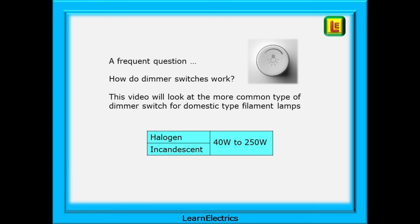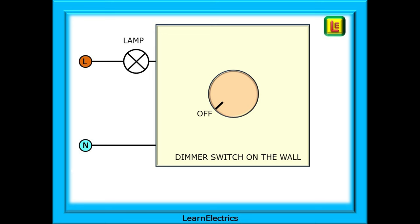Dimmable LEDs will require a different type of controller method and will be shown in another video. When we see a dimmer switch on the wall, what is actually going on inside the switch itself? Gone are the days when a simple wire wound variable resistor did the job. If you remember those, you may also recall that they started to become warm in use as the wire wound resistor dropped the voltage to the lamp. It's all different now.